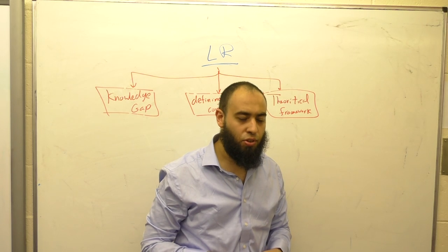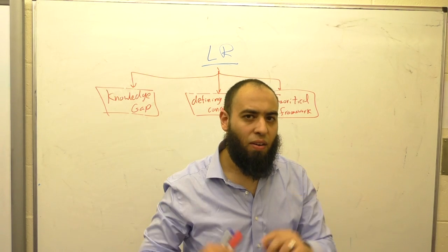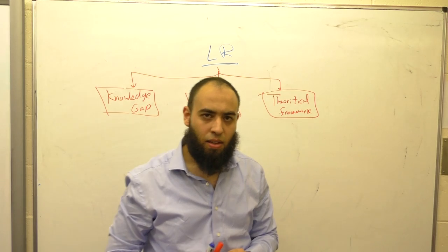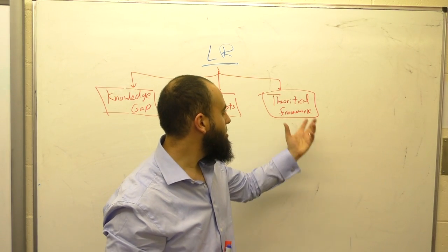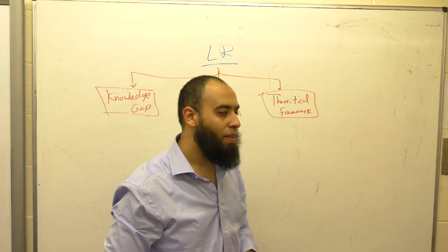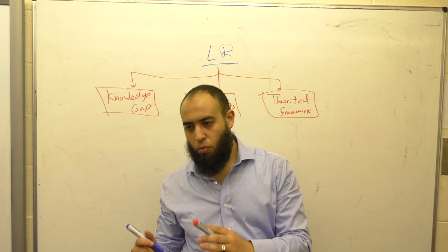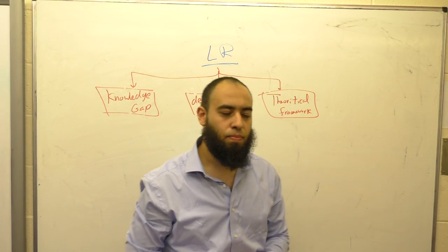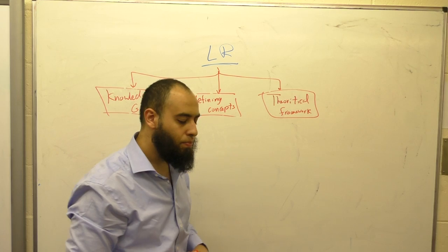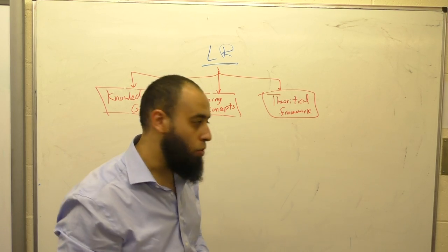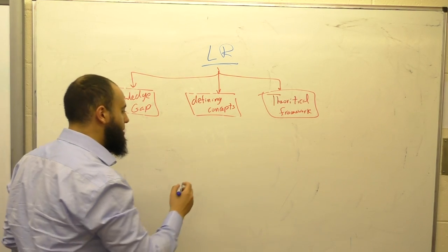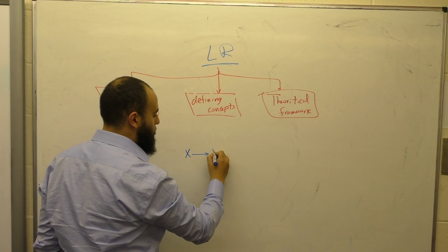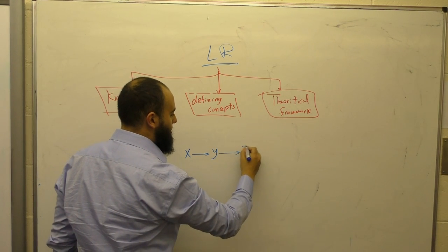Theoretical framework in positivist research is a set of hypotheses to be tested later. Once you test these hypotheses after collecting data, we call it a model. So theoretical framework is before testing; after testing we call it a model. For example, we say X affects Y, and Y affects Z.